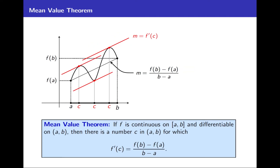It's important to realize that there could be numerous values of c between a and b for which f prime of c equals f of b minus f of a over b minus a. For example, for this c right here, that slope equals the connecting line slope, as does this slope, and as does this slope. So three different values of c for which f prime of c equals this fraction. The Mean Value Theorem guarantees that there is at least one such c.